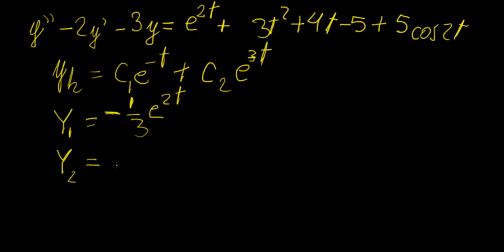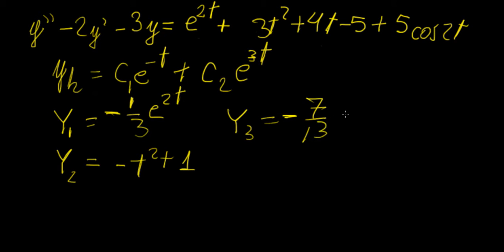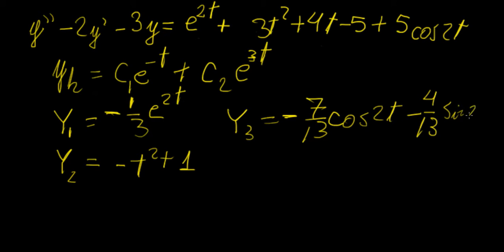Y2 is going to equal -t² + 1. And finally, Y3 is the solution for the cosine term, which we found to be 7/13·cos(2t) - 4/13·sin(2t).